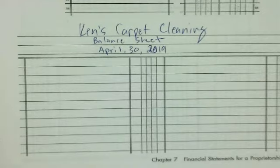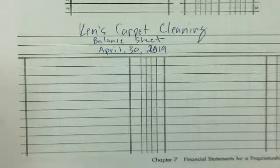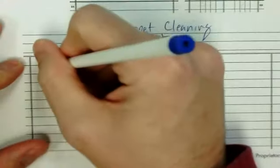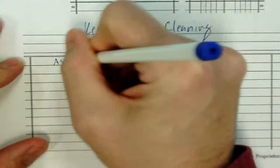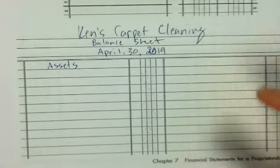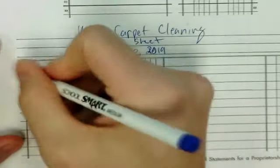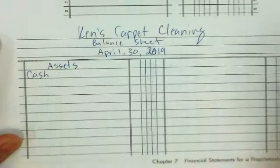We have already done the three-row heading: name of the business, name of the document, and the date. Now we're going to do assets on the left — debit on the left, credit on the right. Assets.